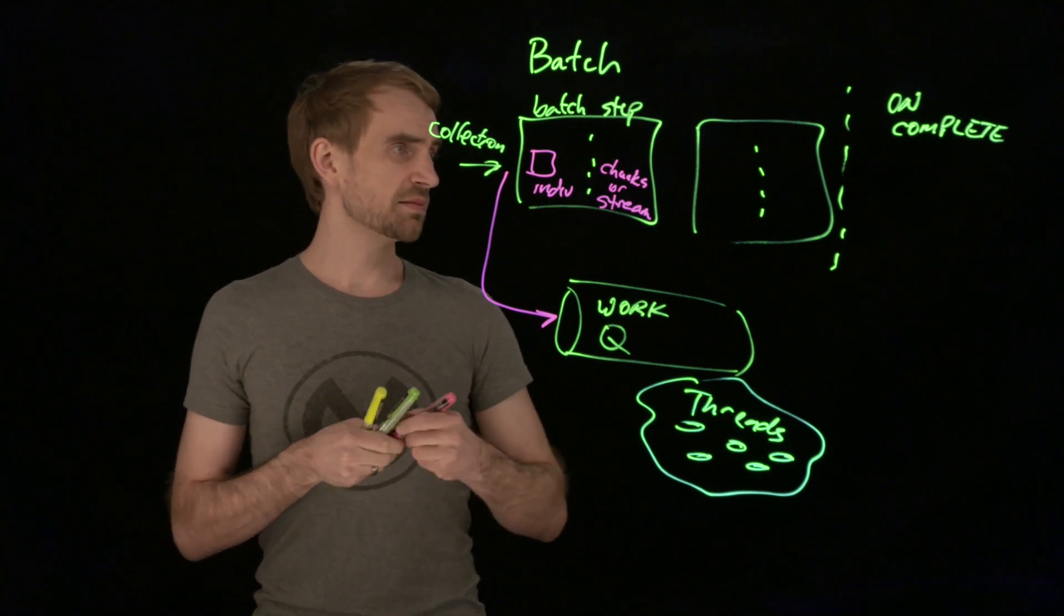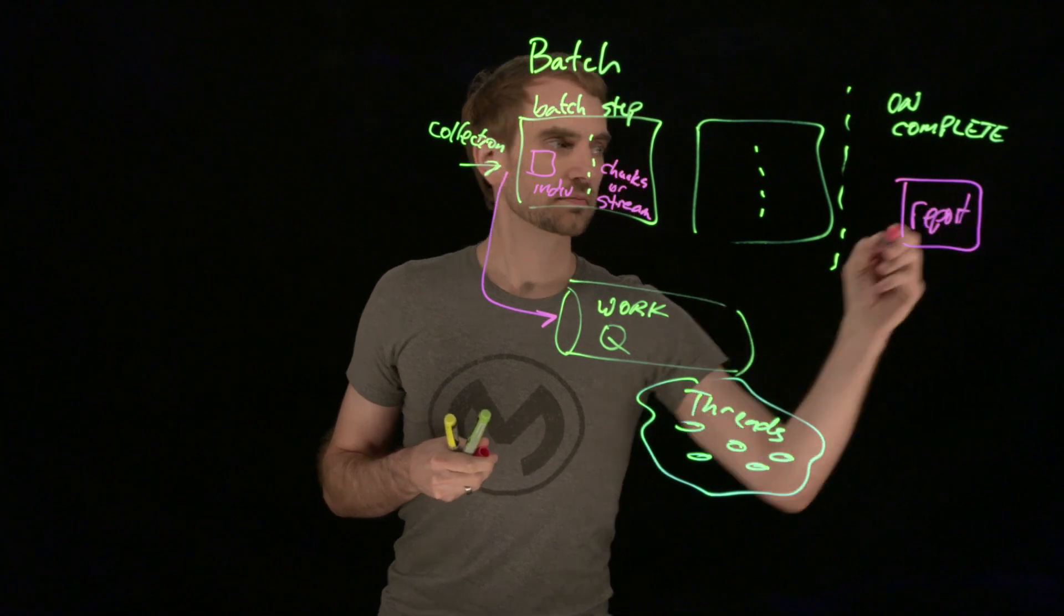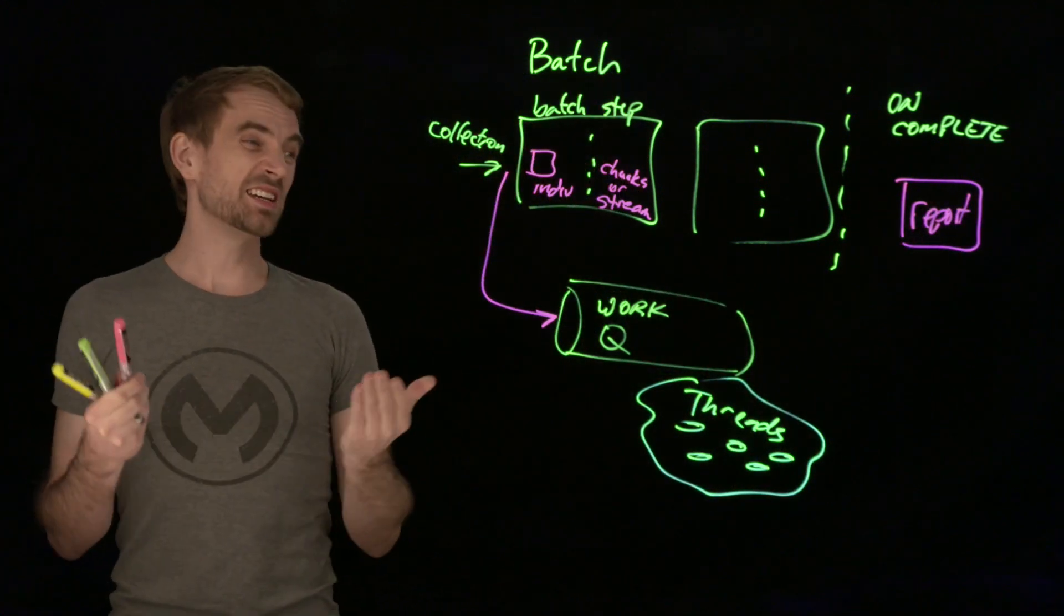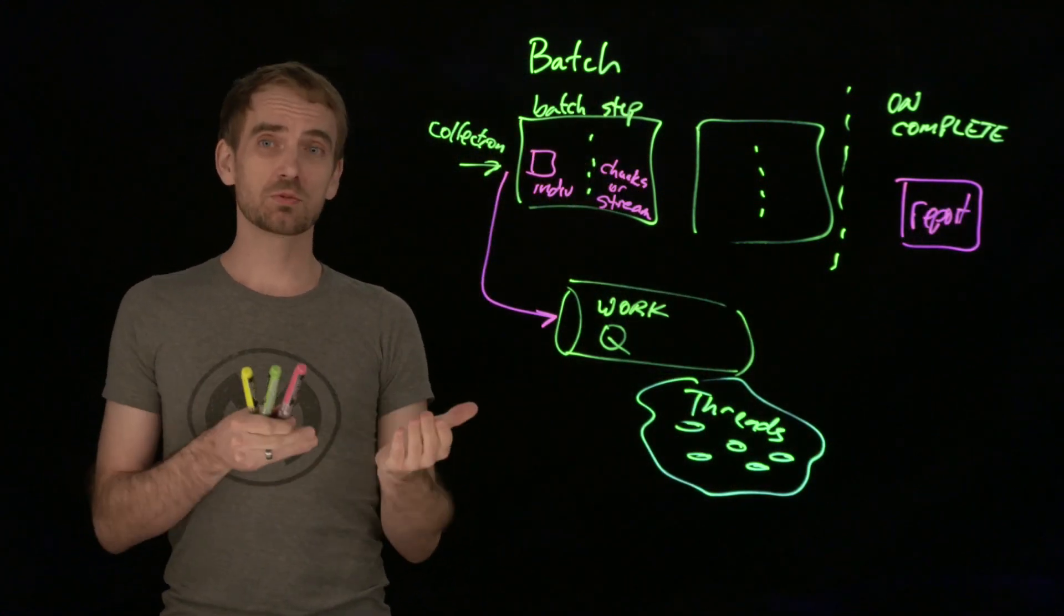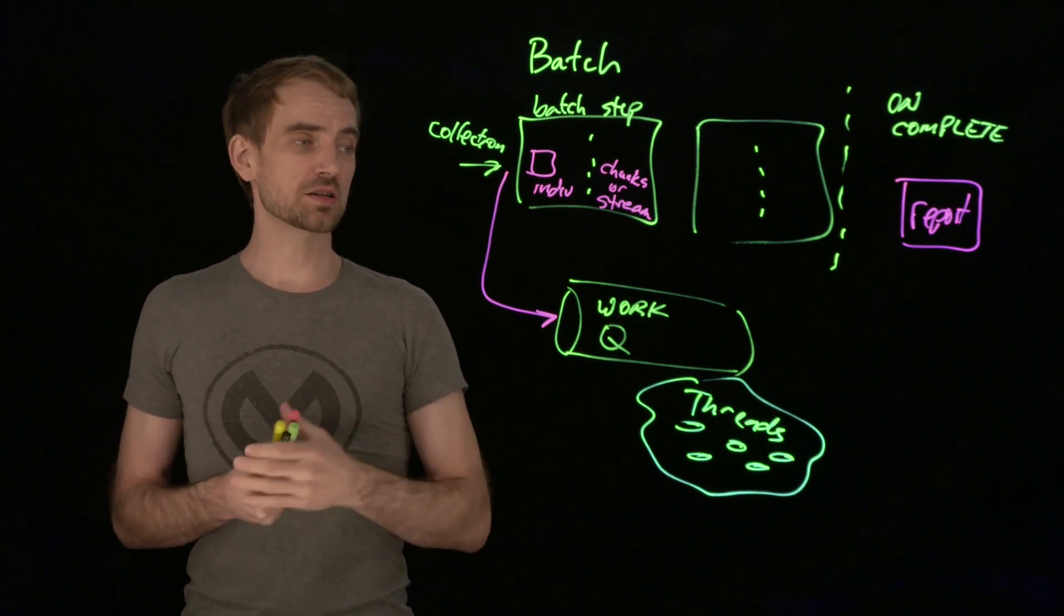And the OnComplete, as I said, that's where you do some sort of report. So getting your report is so that you know whether it completed, whether it failed, and that's the overall batch processing.